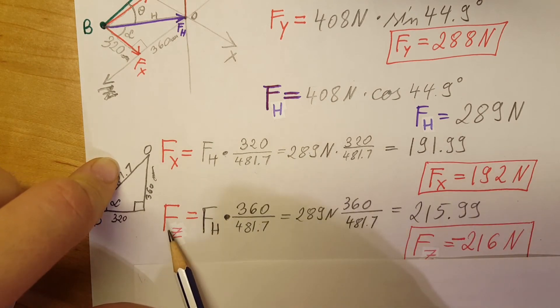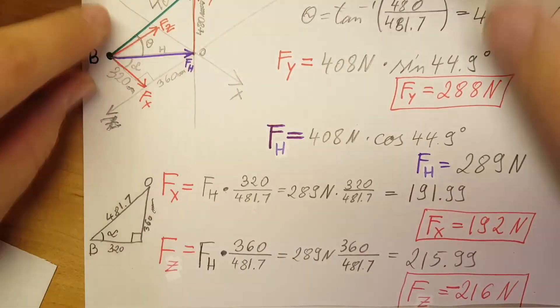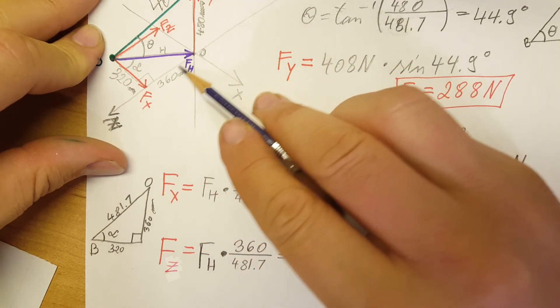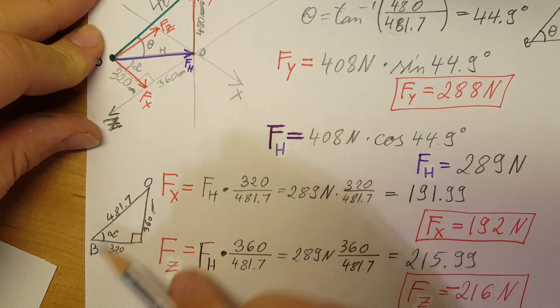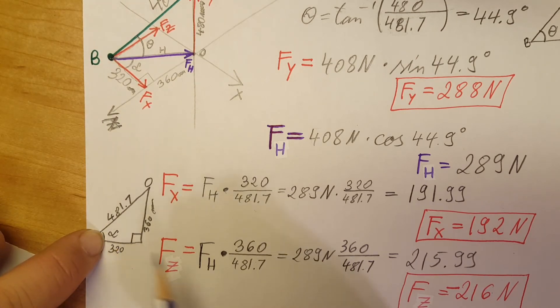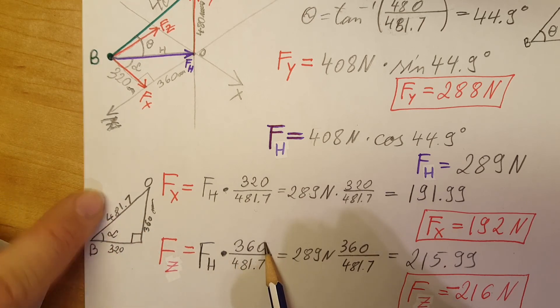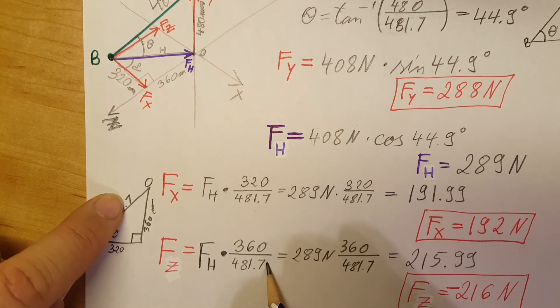Our last component, we're going to do it in the same way, which is FZ right here, which is equal to this one. So from this triangle, which is this, we can see that we can calculate FH times the sine of this angle. But instead of using the angle, we're gonna use the ratio—sine is opposite over hypotenuse. So I'm gonna plug in opposite is 360 millimeters over 481.7 millimeters.